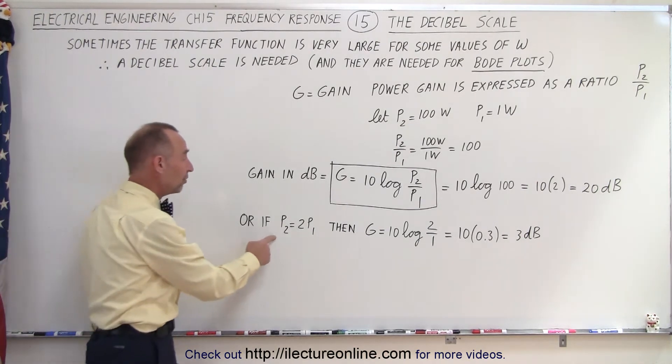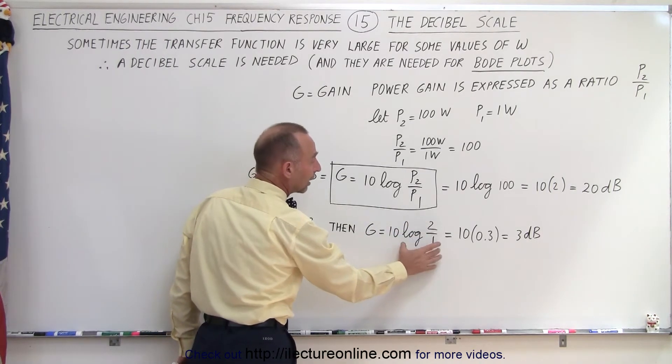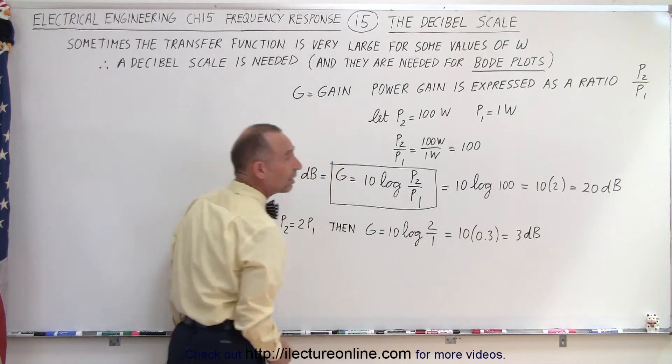If the power is twice as much, then the gain would be 10 times the log of 2 to 1. The log of 2 is equal to about 0.3, so 10 times 0.3 is 3 decibels.